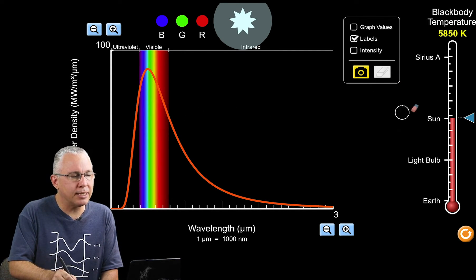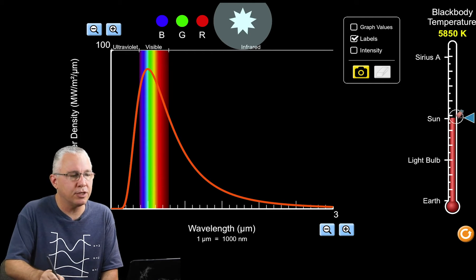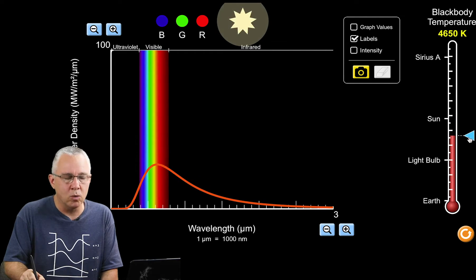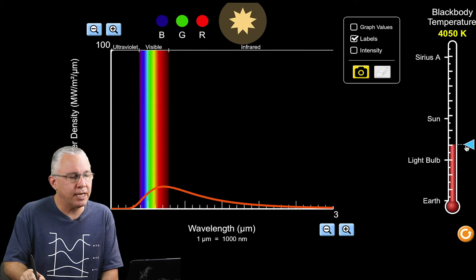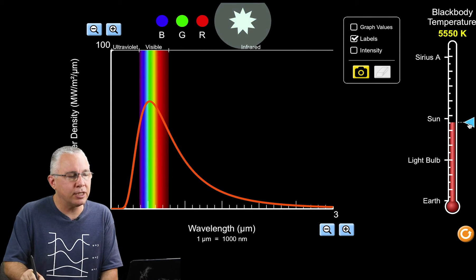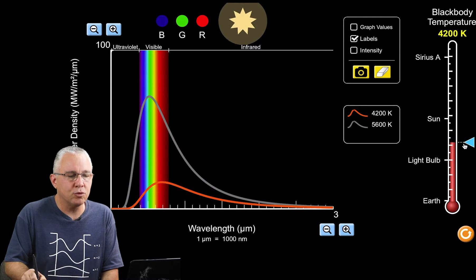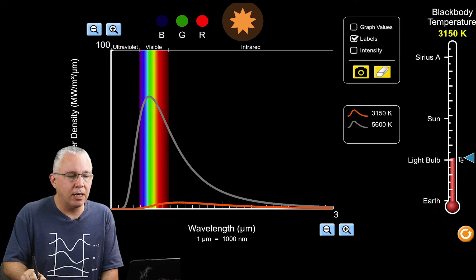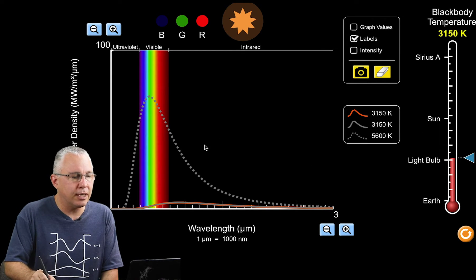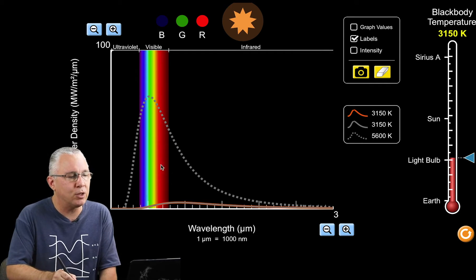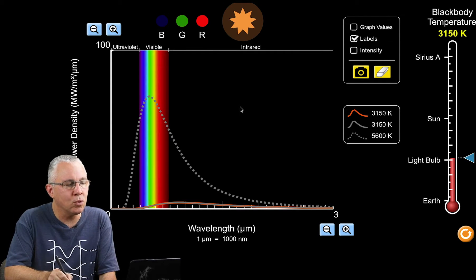Let's look at what happens to the spectrum as I change the temperature. I'm going to lower the temperature and you'll see we get a drop of intensity along all wavelengths, but the peak actually drops. Let me take a photo of where the sun is and then drop to the radiation emitted by a light bulb. You can see there's now a significant difference.